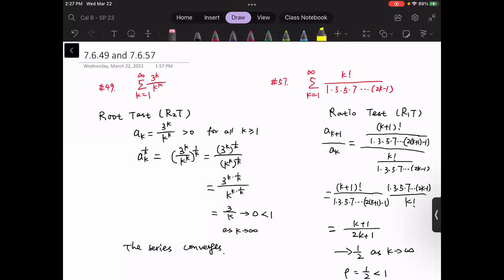First, we want to use the root test to handle number 49. This is because we observe the exponential function 3 to the power of k in the numerator, and in the denominator we see a format like k to the power of k.